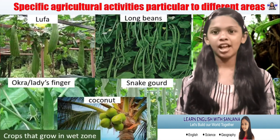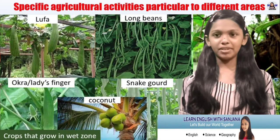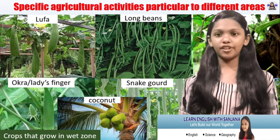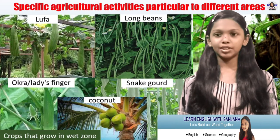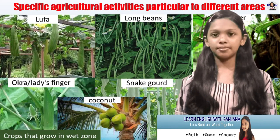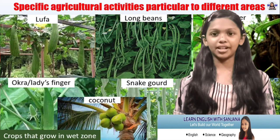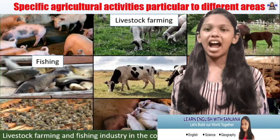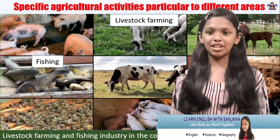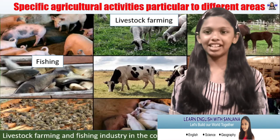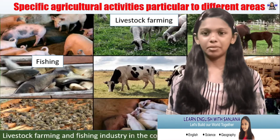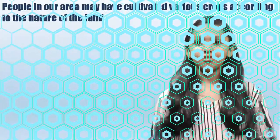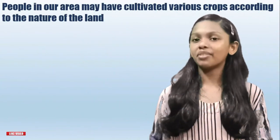Some crops that grow in the wet zone include loofa, long beans, pepper, native ginger, coconut, snake gourd, and cinnamon. Livestock farming and the fishing industry are two more branches of agriculture and are very common in coastal areas.